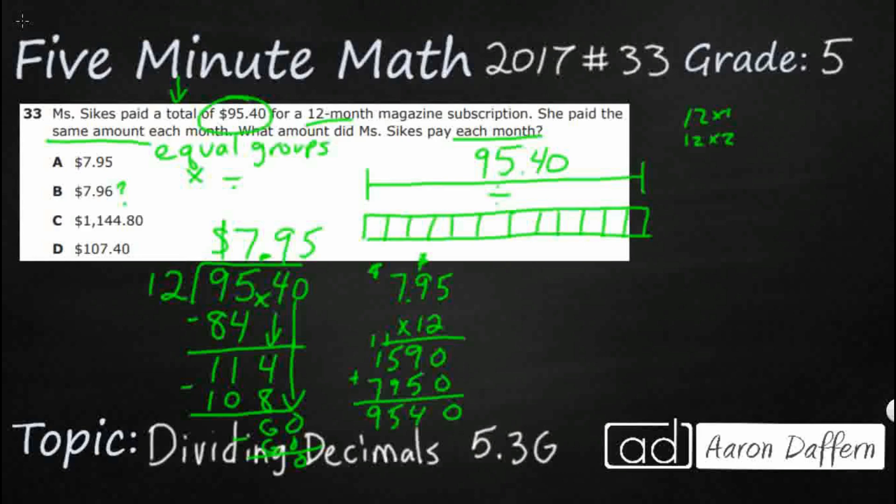We had two digits behind the decimal coming in. And we need two digits behind the decimal going out. That's what we multiply by decimals. 95.40, which gets us right back to what we want to. So we were correct. Our answer is going to be A, $7.95.